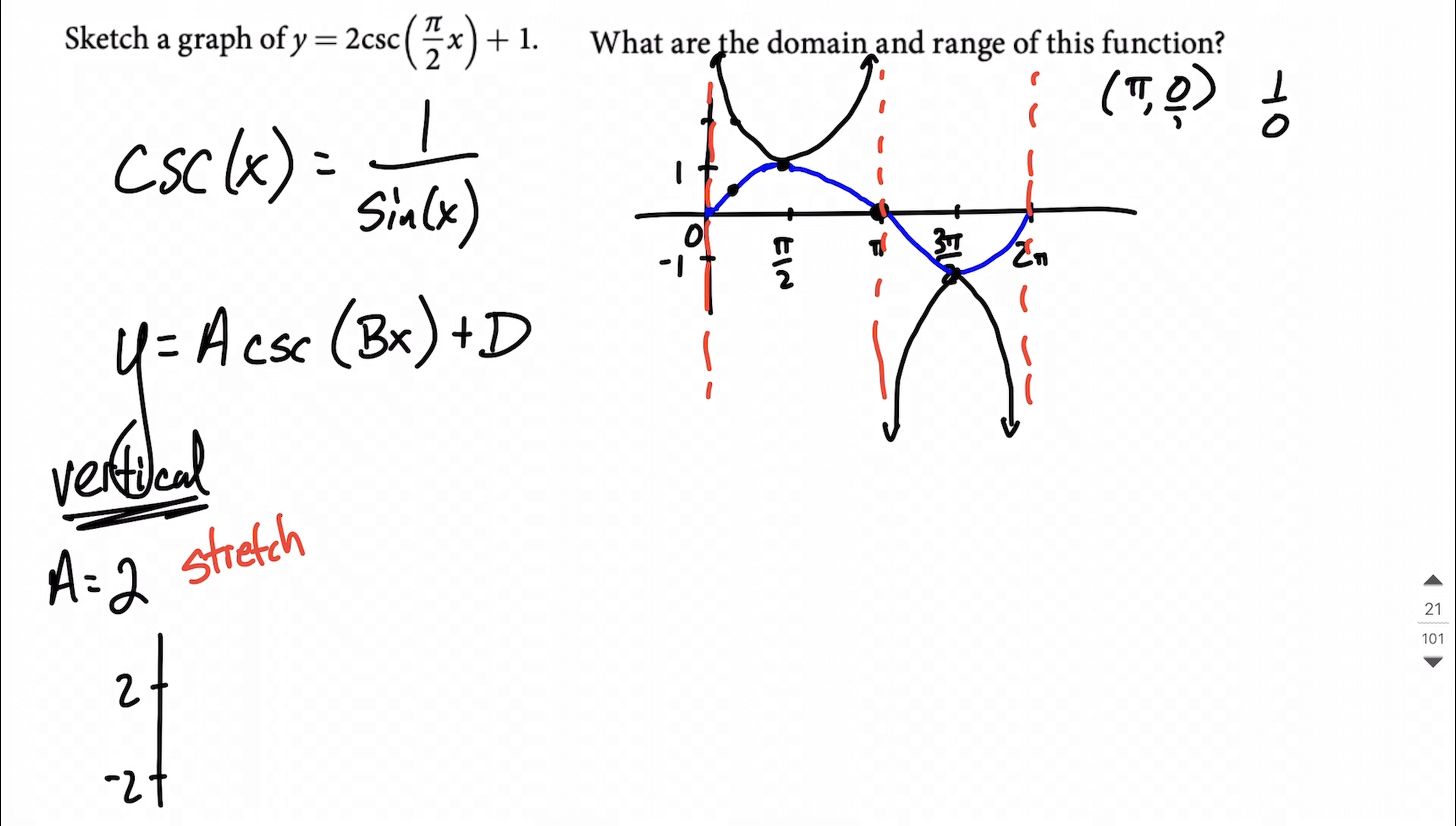The other component affecting this vertically is d. d works out to be positive 1. Thinking about transformations, we've added 1 to the entire original cosecant graph. This moves everything up one unit. We go from 2, go up one unit to 3. And negative 2, when we go up one unit, goes to negative 1. Negative 2 plus 1 makes negative 1 for our new labels on the y-axis.